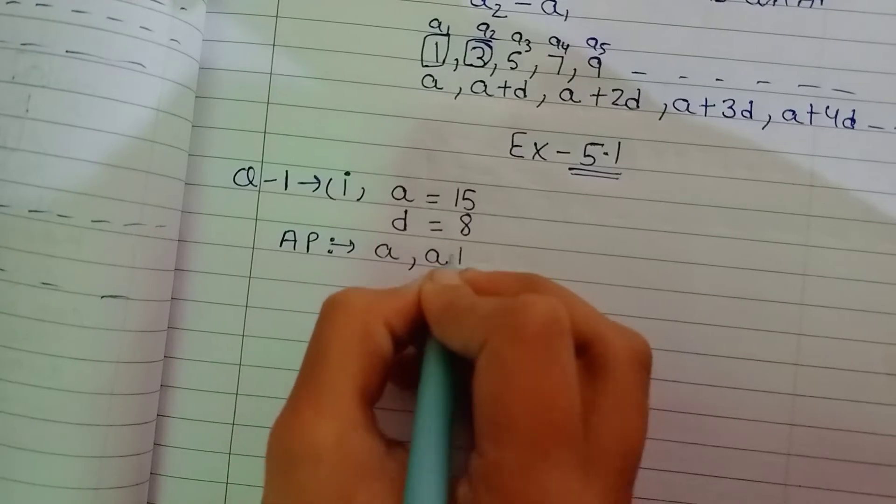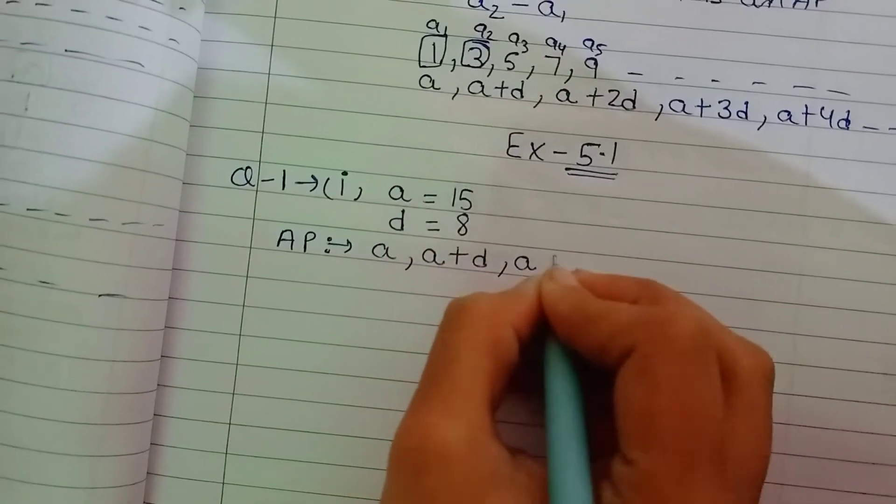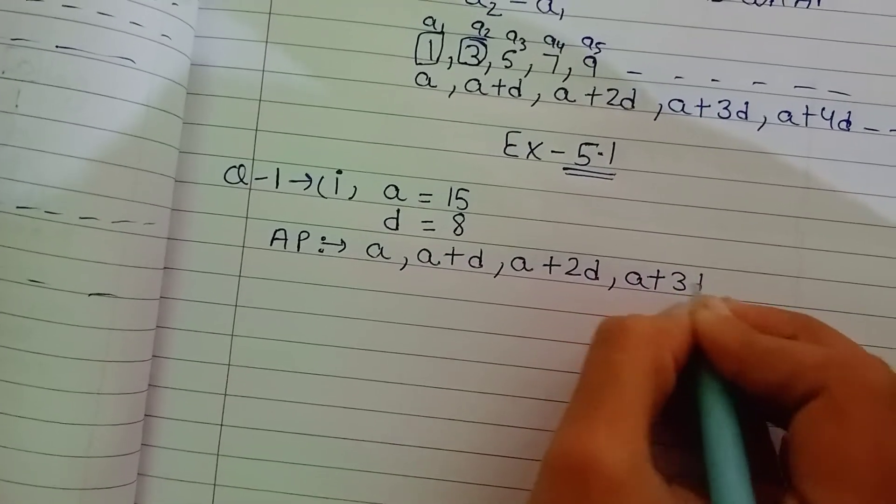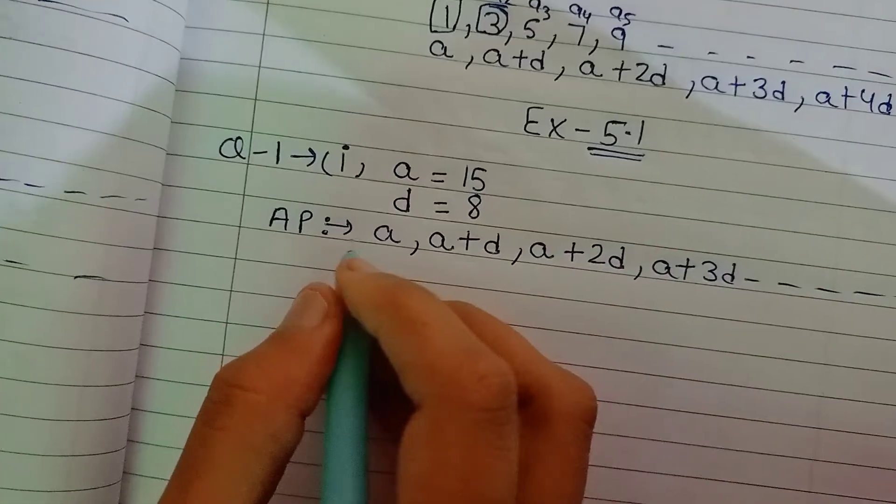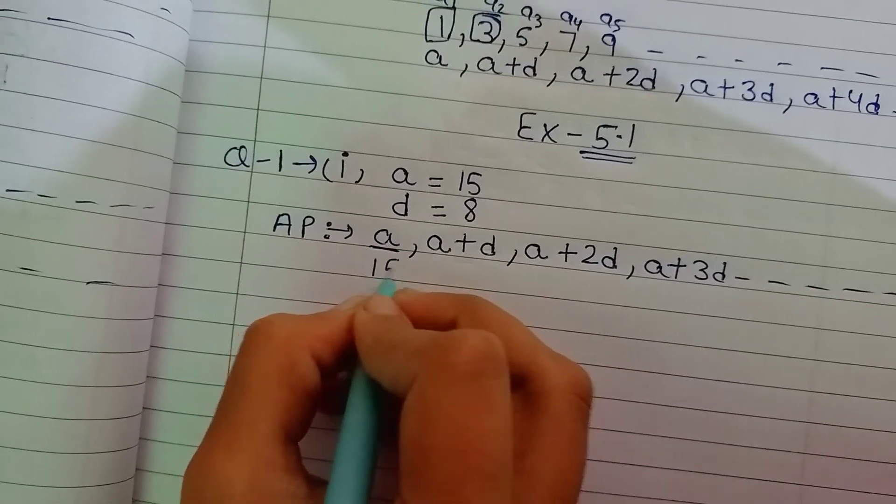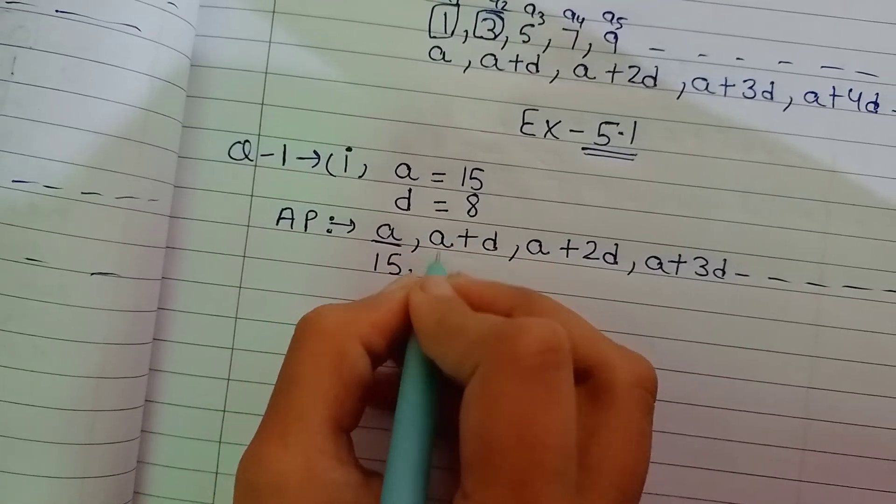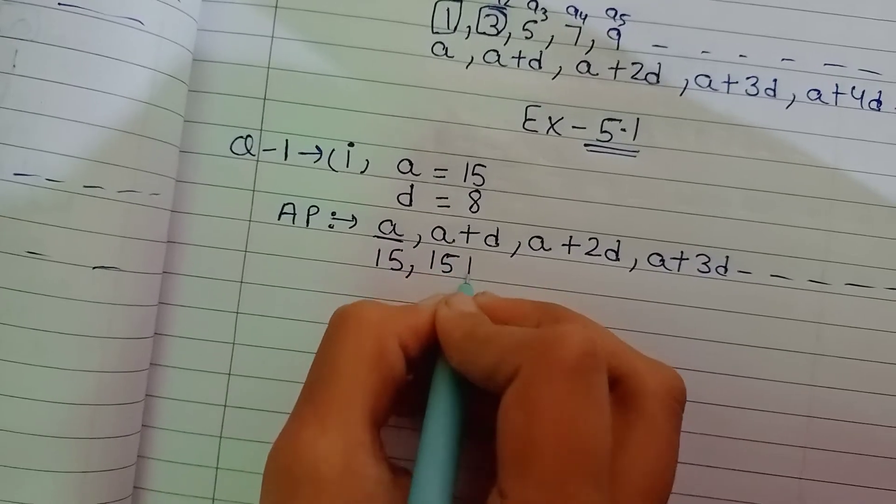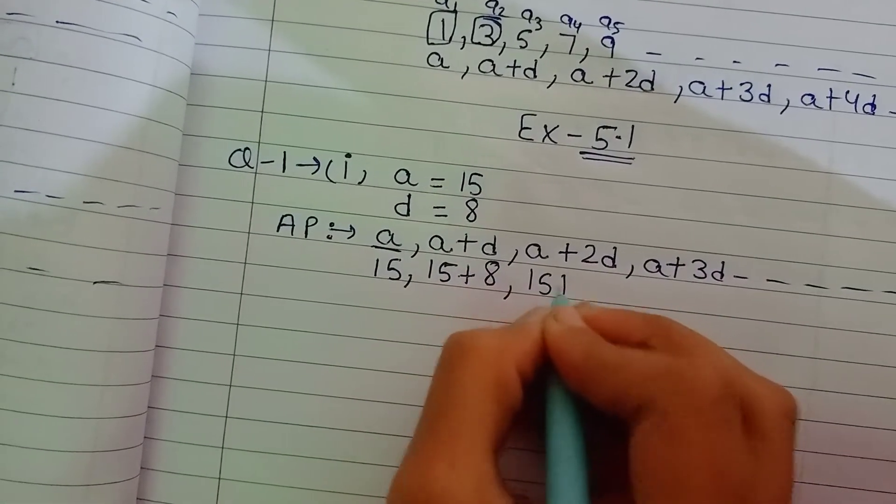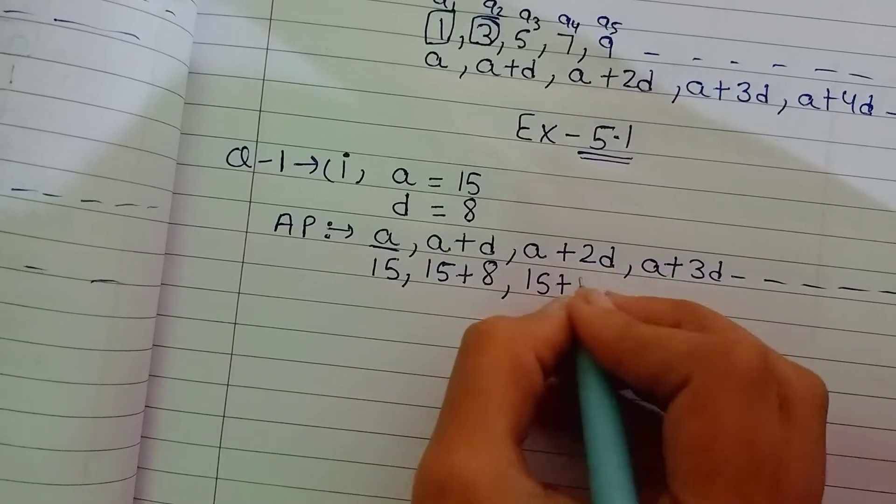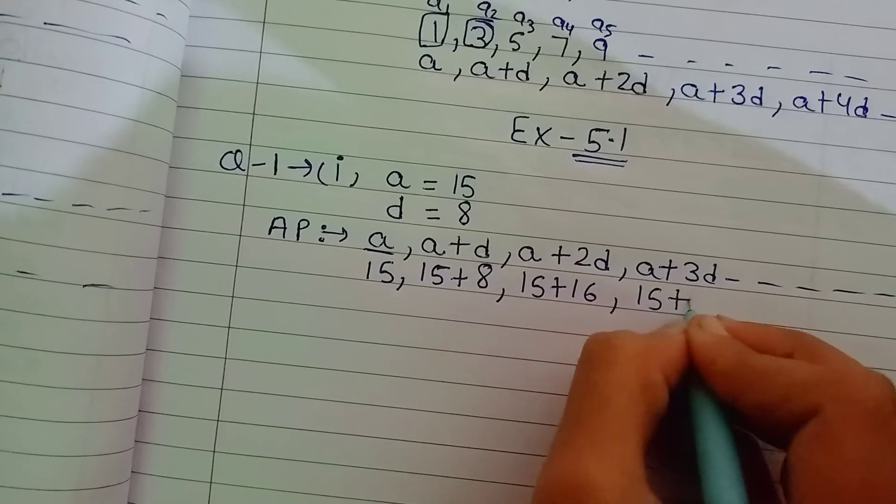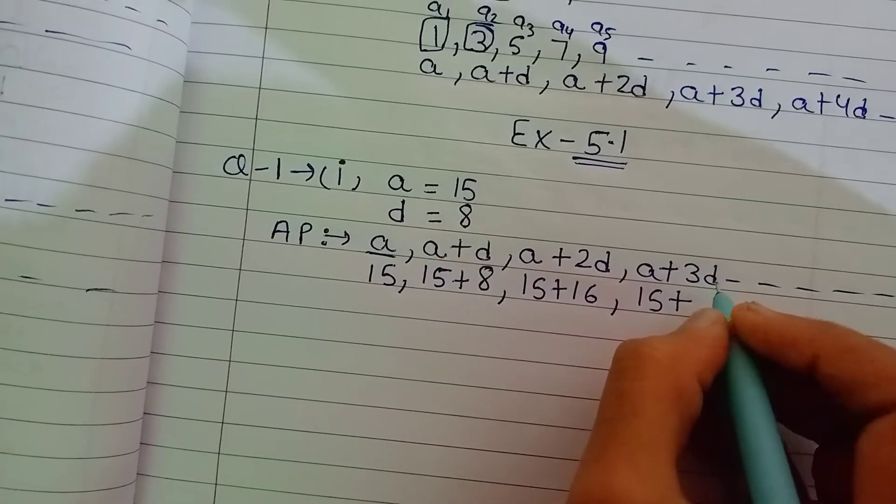A, a plus d, a plus 2d, a plus 3d. So first let's see. A value is 15. Plus d value is 8.